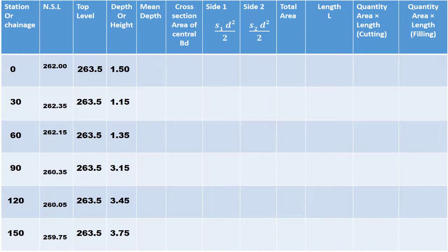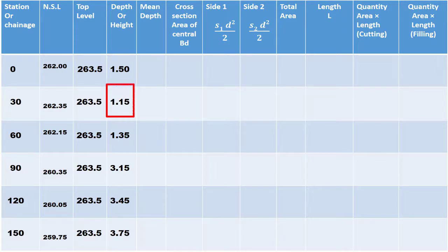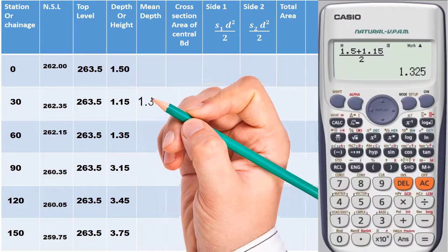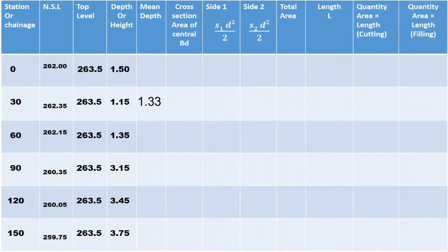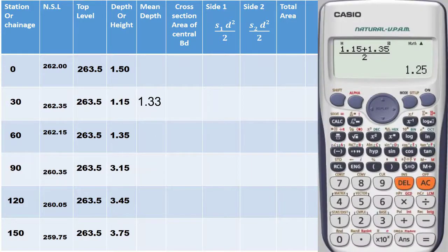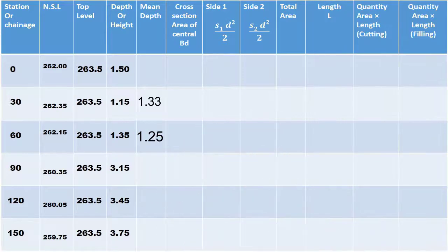In the next column, find the mean depth for each interval. The mean depth between chainage 0 and 30 is (1.5 + 1.15) divided by 2, equal to 1.33. For the next interval, (1.15 + 1.35) divided by 2 equals 1.25, and so on for the remaining chainages.